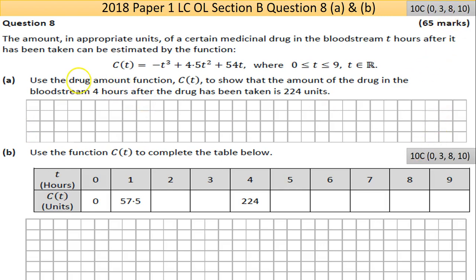It's about 40 marks max, so we have to pick up some good marks. The amount, in appropriate units — we're not being given the units here, so just use the word 'units' — of a certain medicinal drug in the bloodstream t hours after it has been taken can be estimated by the function. The drug has an effect at a certain dosage, so if your dosage goes below that in the blood it won't be having an effect. You want to know how long it takes for the liver to remove it to ensure you have the correct dosage — that's very relevant in the medical field.